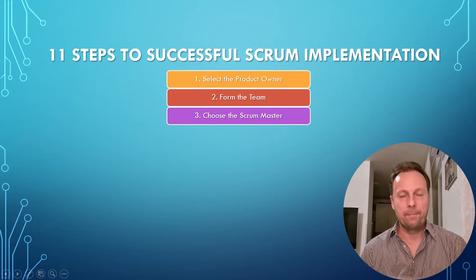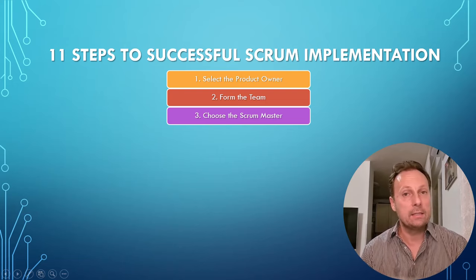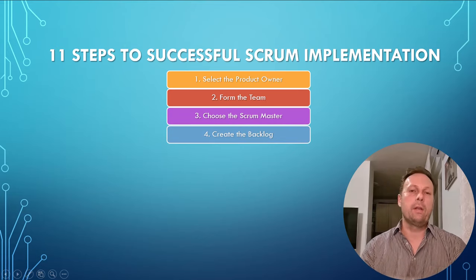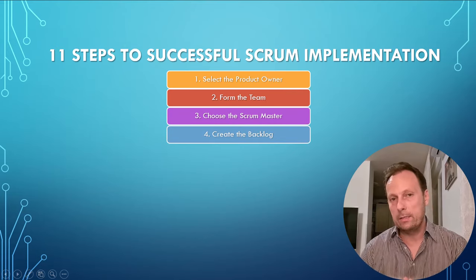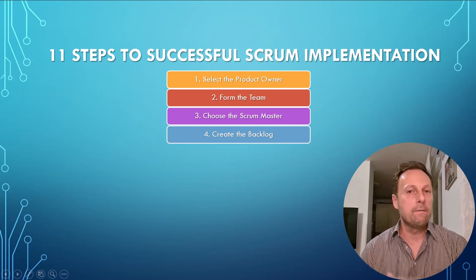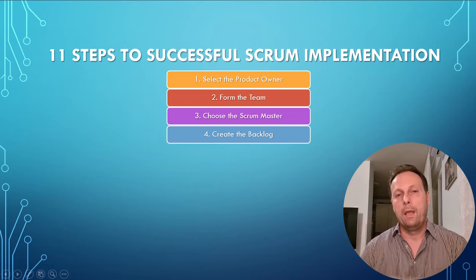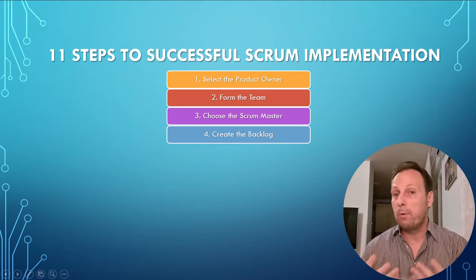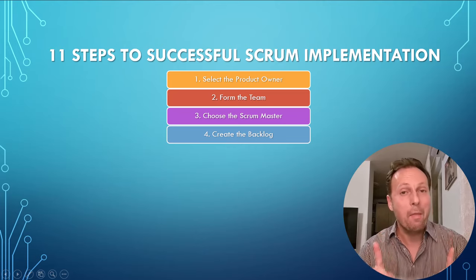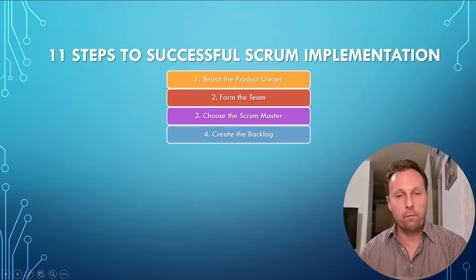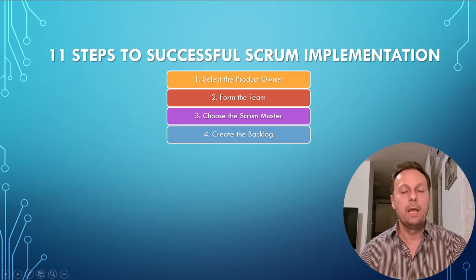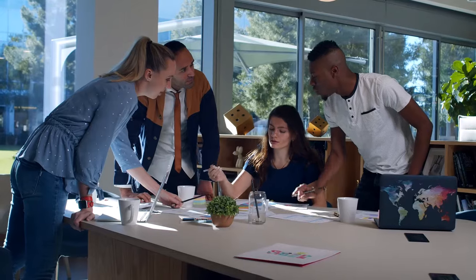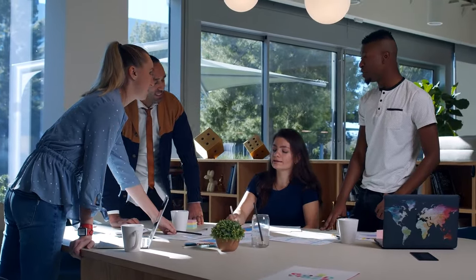Step three: choose the Scrum Master. This person guides the rest of the Scrum team throughout the Scrum framework, helping them eliminate anything that slows them down. Step four: create the backlog. This is the high-level list of everything that needs to be done or created to turn the vision into a reality. This list evolves during the project's life cycle, serving as a road map. There is only one backlog, and the product owner is responsible for prioritizing it. The product owner should consult with all stakeholders and the team to ensure alignment between what people want and what can be produced.